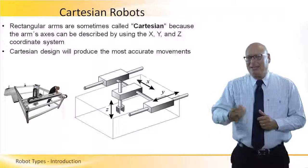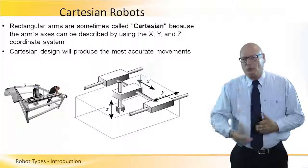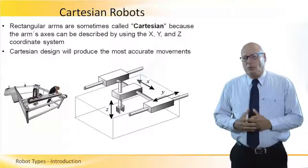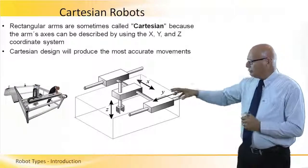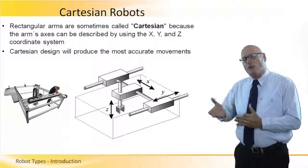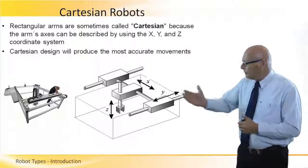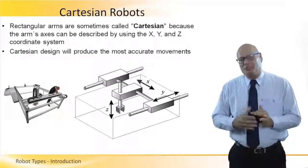And basically, it's the most accurate robot of all. We can see the working space, the three different directions, X, Y, and Z. And on the left, there's a practical example of this Cartesian robot.